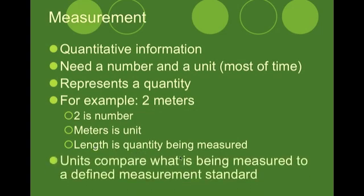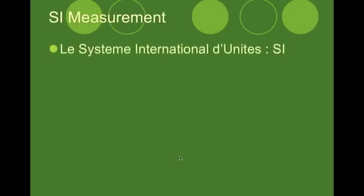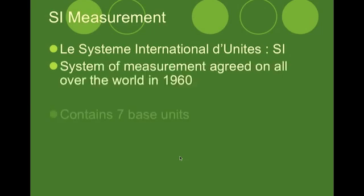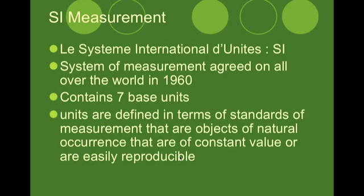Now unit compares what is being measured to a defined measurement standard. The units we have are standards that we use to compare things to. Now the system that we use in chemistry is called the SI units of measurement. In 1960 they were agreed upon all over the world and they contain seven base units.